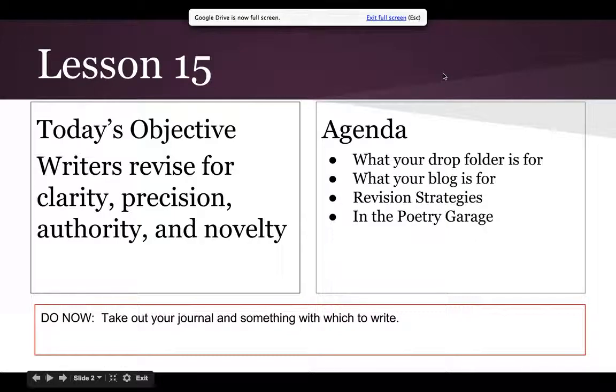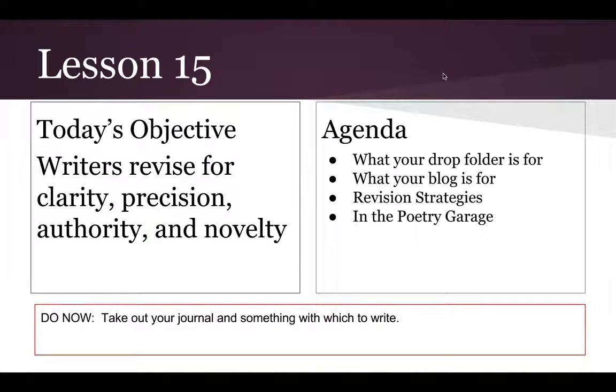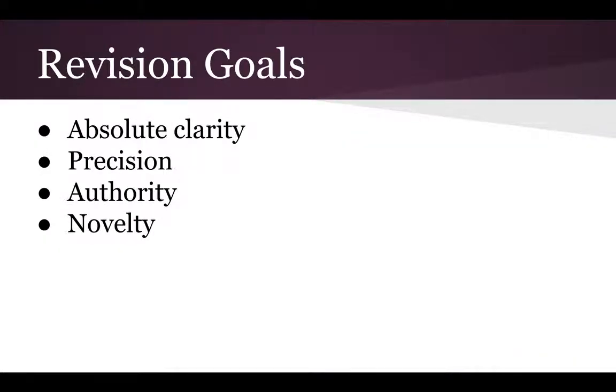Okay guys, today we're going to be working on revision. The objective is that writers revise for clarity, precision, authority, and novelty. We're going to be using a new way to help each other arrive at ideas and strategies for revising your poems. Again, here are your goals for revision: absolute clarity, precision, authority, and novelty. Four things that you are working on any time that you revise a poem or any other kind of writing.